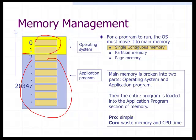The operating system has to be in main memory because it's still a program that needs access to the CPU, and the application part goes in the remainder. The entire program must be loaded into main memory. The pro for this is that it's simple; the con is that it's a waste of memory and CPU time because one program may not need all that space.